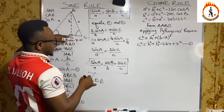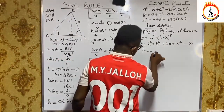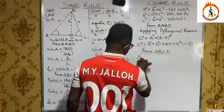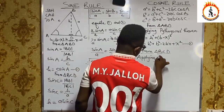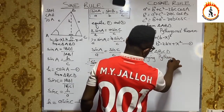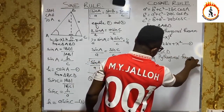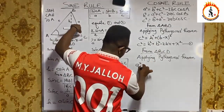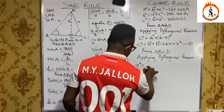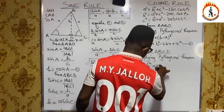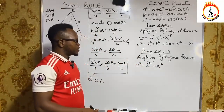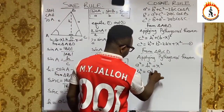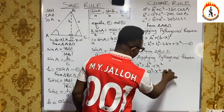We also have triangle BCD. Applying Pythagoras' theorem here: the square on the hypotenuse a² equals the sum of the squares on the other two sides, giving us H² + X². Making H² the subject: H² = a² − X². We refer to this as our second equation.